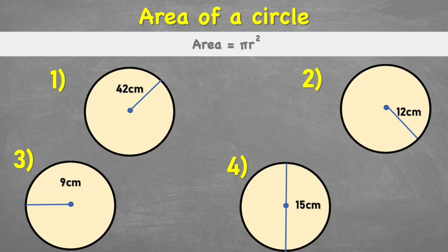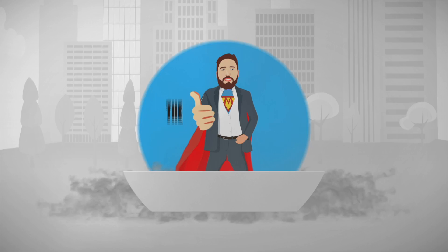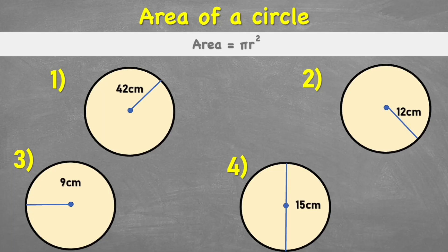Welcome back to The Maths Guide. Today we're looking at how to work out the area of a circle when given the radius. The radius is the measurement from the center point to the circumference — the circumference being the measurement around the outside edge of the circle. This radius measurement is very useful for working out the area.